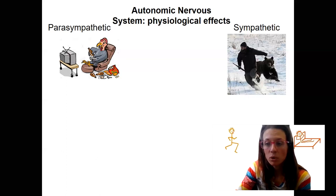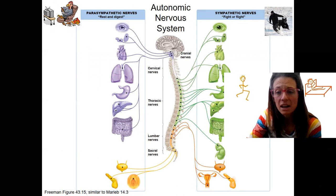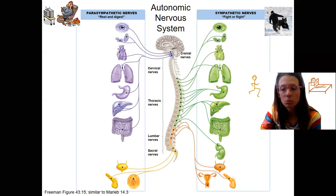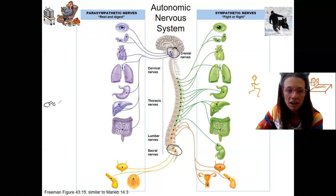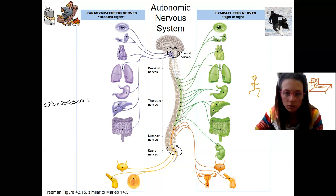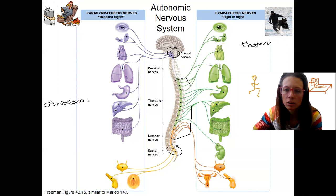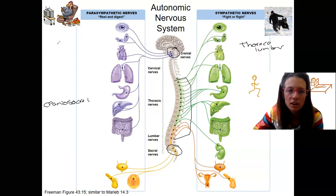Now I'll show you the same thing with a more detailed diagram. There are lots of ANS diagrams out there, and I want them to not look so scary. We've got the parasympathetic nervous system coming from the cranial and sacral regions — our craniosacral division. The sympathetic is coming from our thoracolumbar region. What's missing from this picture is the ganglia — this diagram does not show the ganglia.